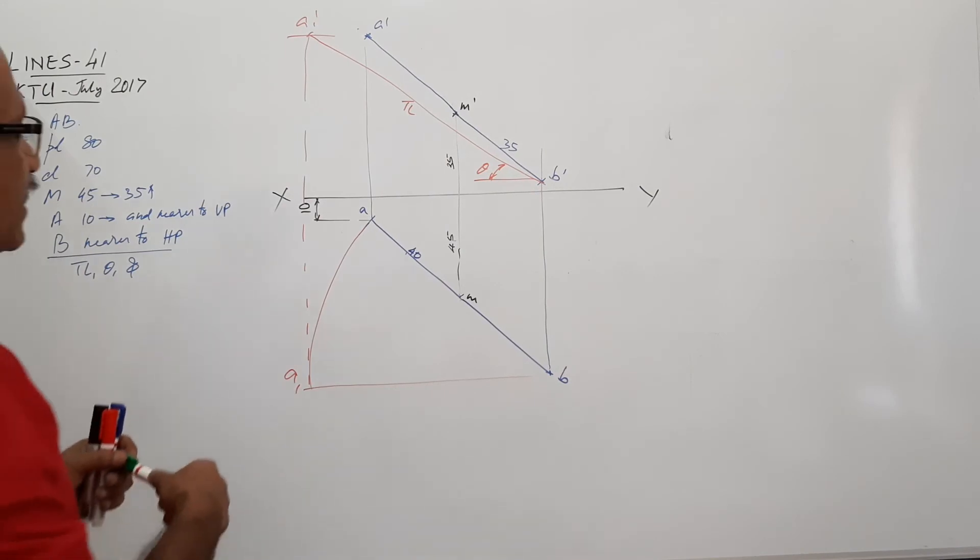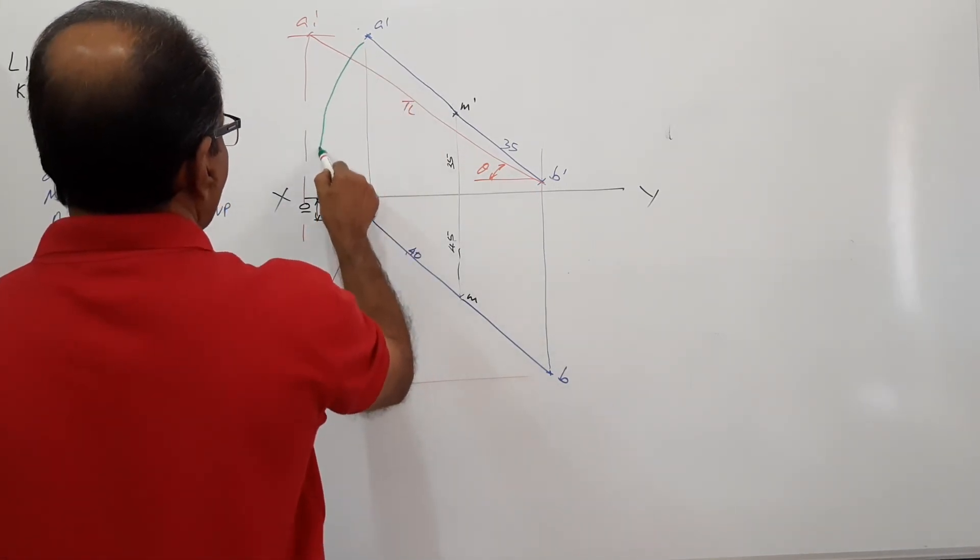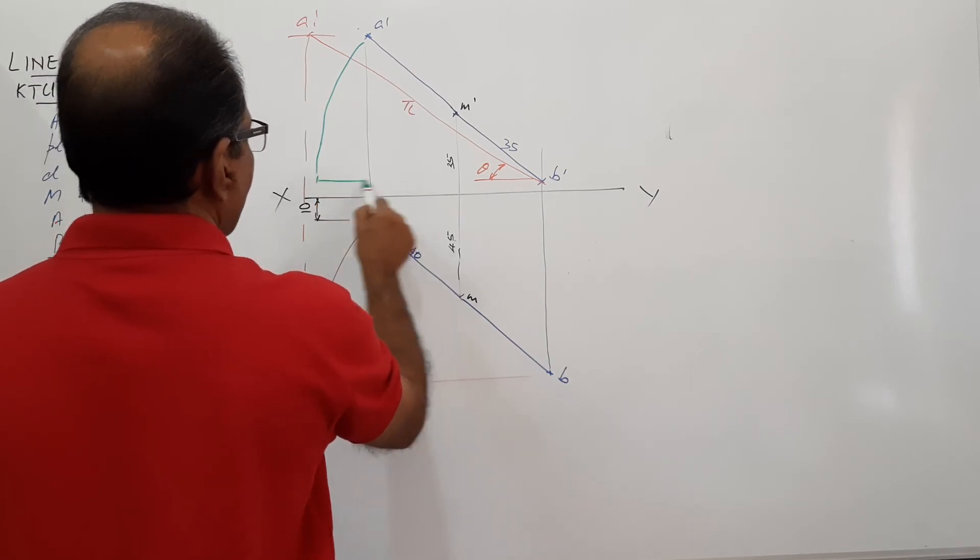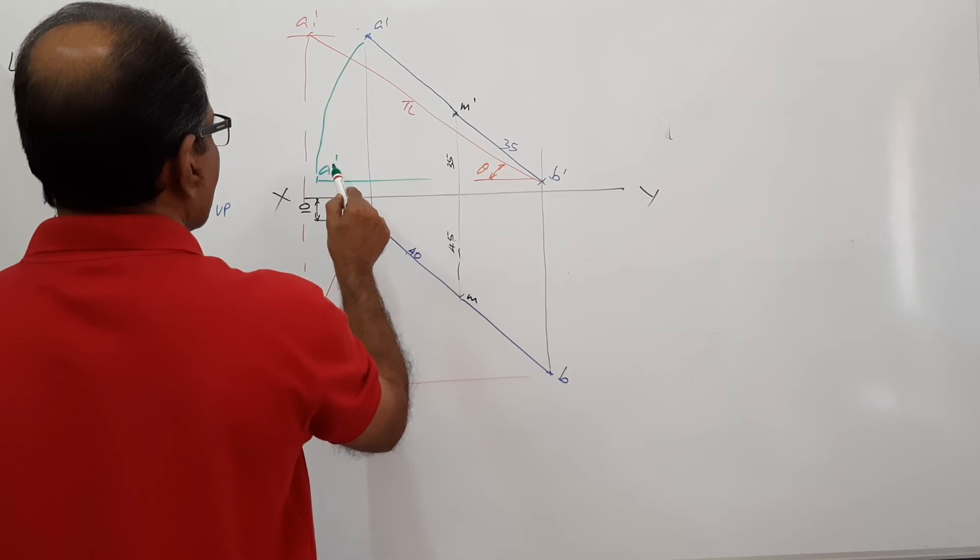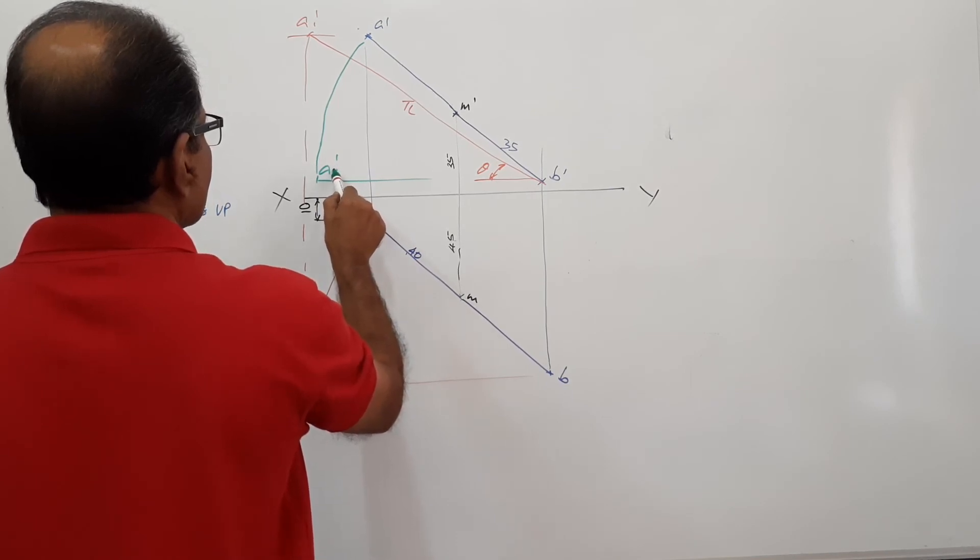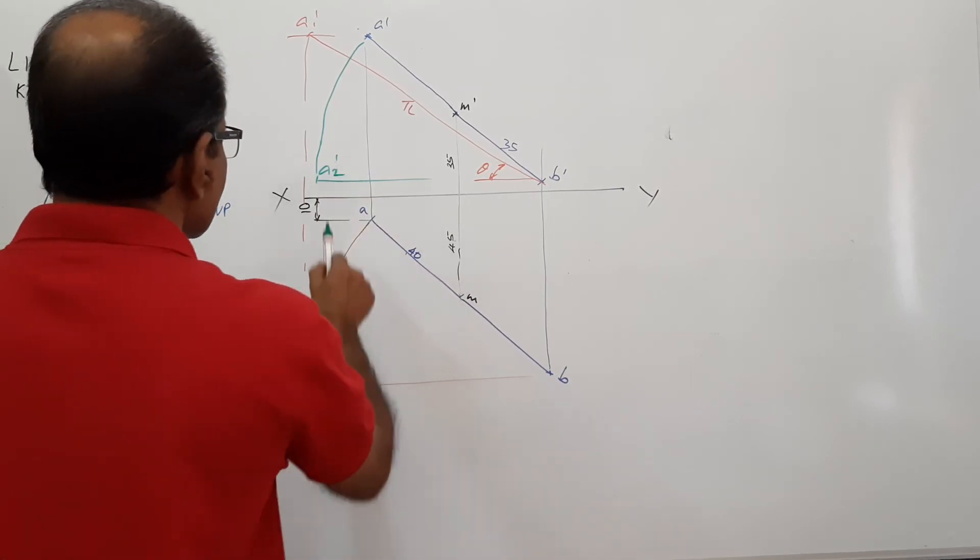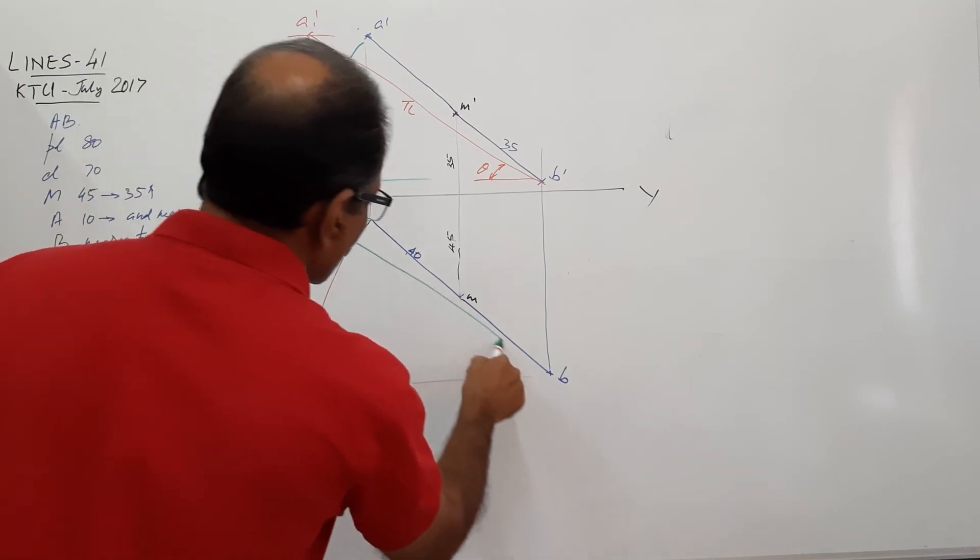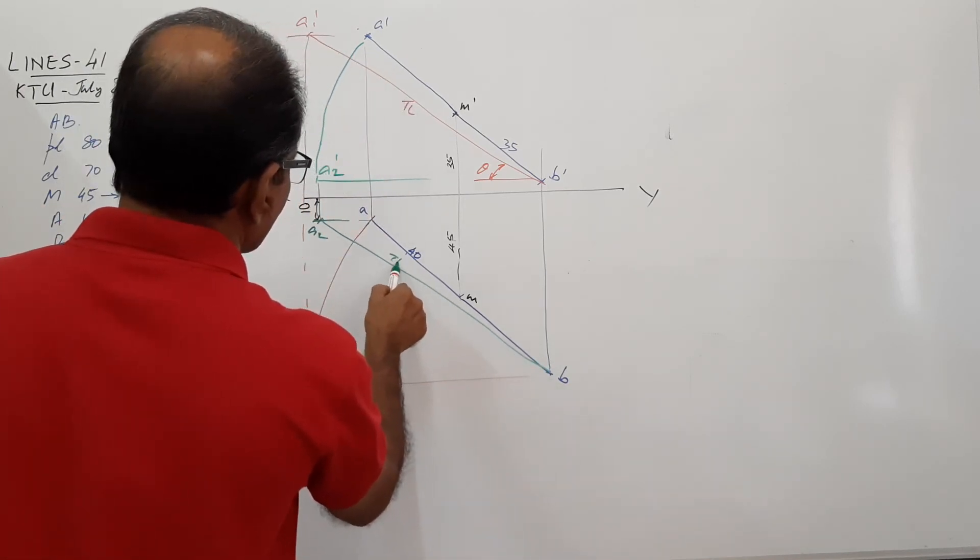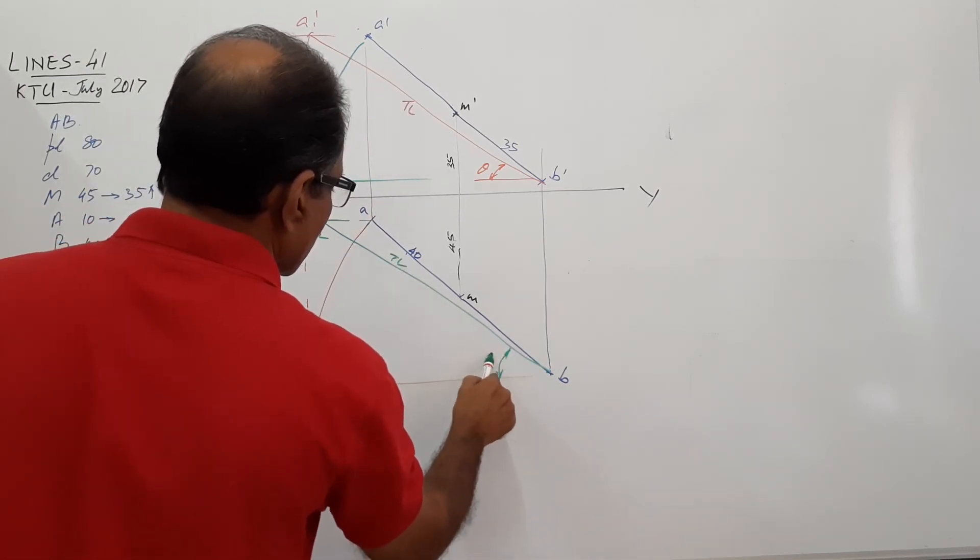So I make the elevation parallel to xy. A1, A2 dash, A2. True length. Phi.